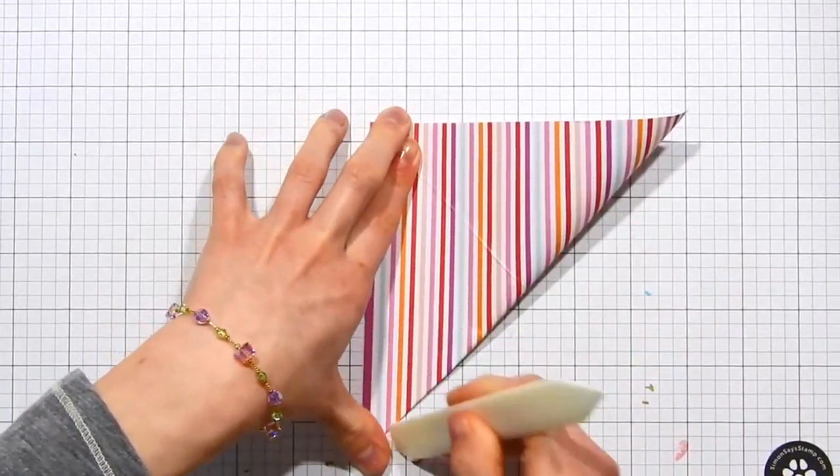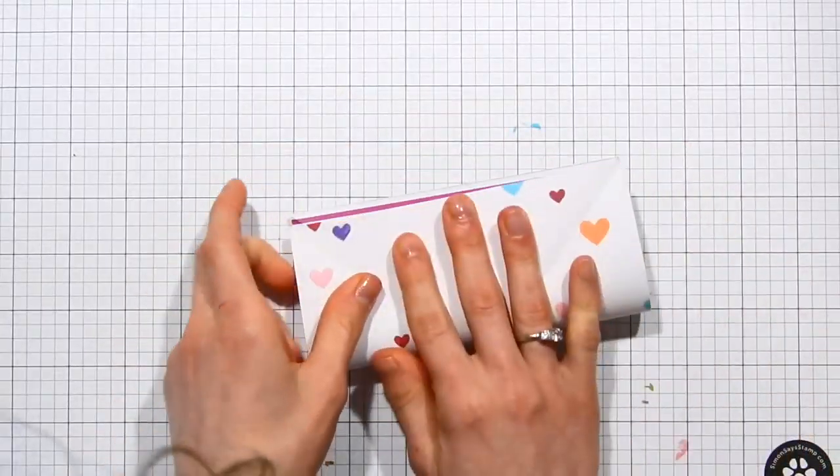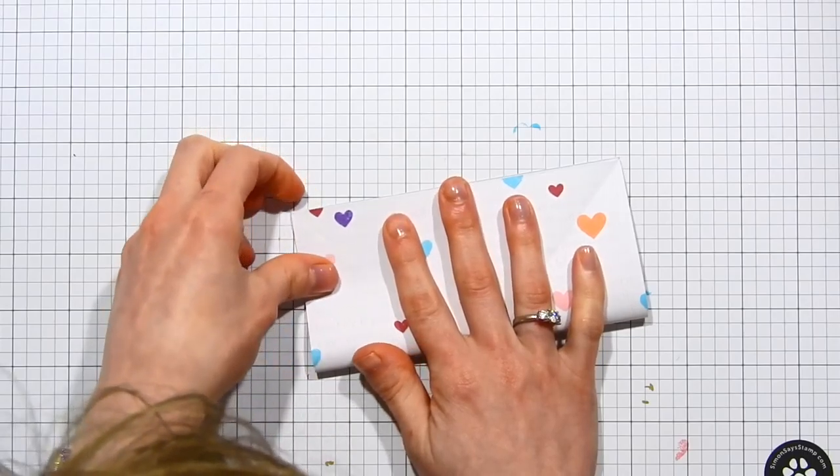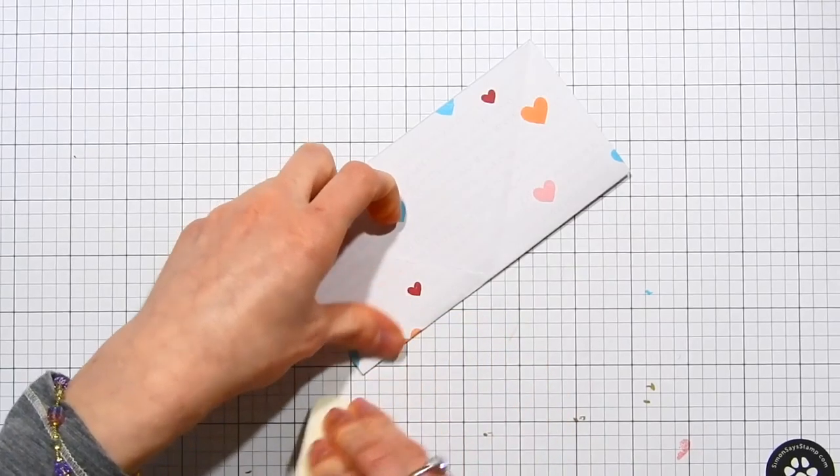After I've folded the paper to create those two triangles, I'm going to go ahead and fold this paper in half lengthwise, making sure I get a nice good crease. You want to make sure that you crease your paper really well when you're doing these folds.